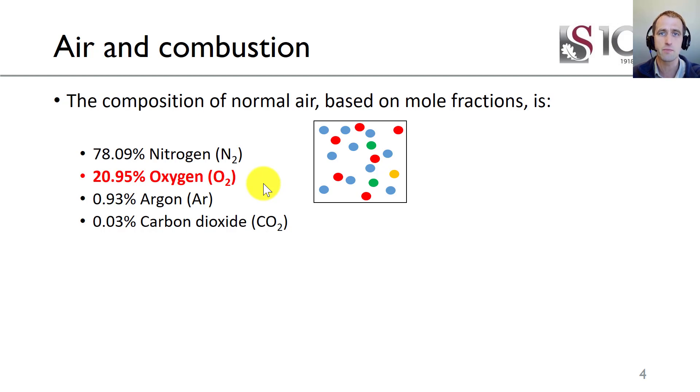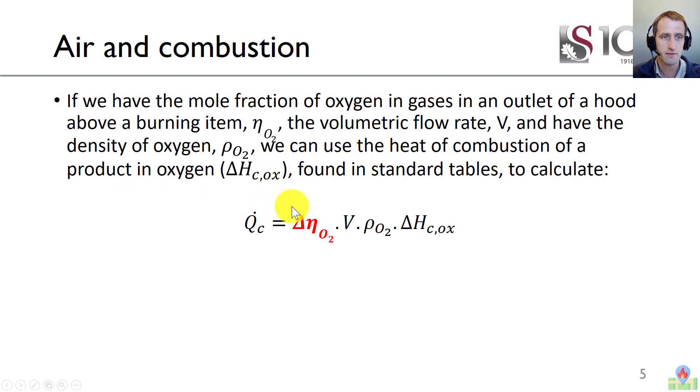That's very important because the amount of energy released per gram of oxygen consumed is relatively constant. If we have the mole fraction of oxygen in gases in an outlet of a hood above a burning item, the volumetric flow, and the density of oxygen, we can use the heat of combustion of a product in oxygen found in standard tables to calculate. So if we know the density of oxygen, volumetric flow rate, and the change in oxygen, we can get our very important heat release rate.